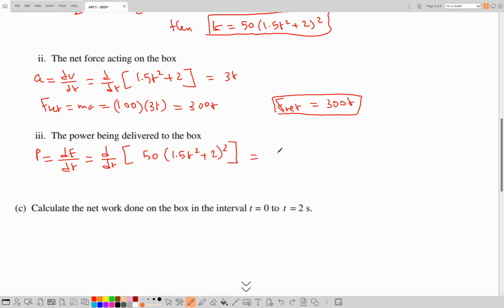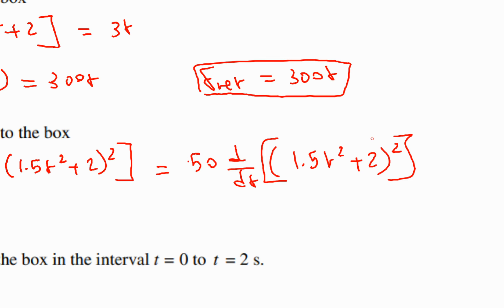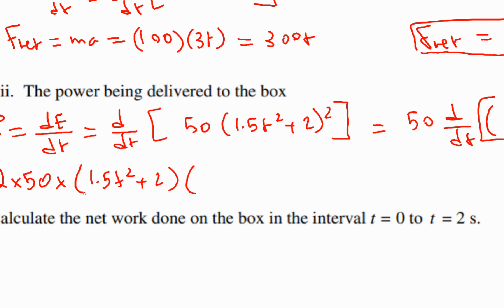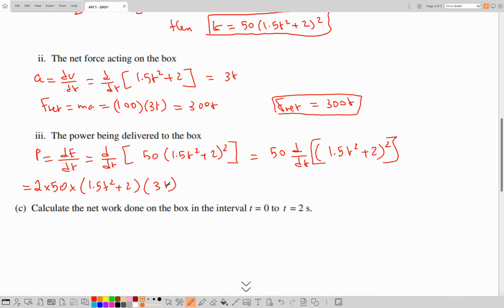Since 50 is a constant, it can be pulled out: power equals 50 times d/dt of (1.5t squared plus 2) squared. Applying the chain rule, we drop down the power: 50 times 2 times (1.5t squared plus 2) to the power of 1, multiplied by the inner derivative which is 3t. So 100 times 3 equals 300t, giving power equals 300t times (1.5t squared plus 2). Expanding this expression gives the power.